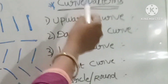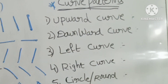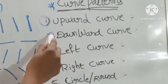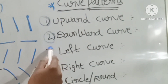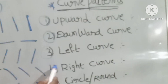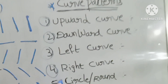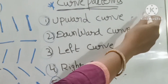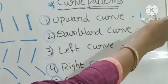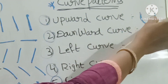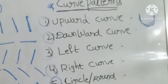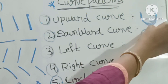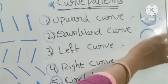Curve patterns are of five types: upward curve, downward curve, left curve, right curve, and circle. Upward curve — U shape. This is the upward curve. Downward curve — comes down. This is the downward curve.